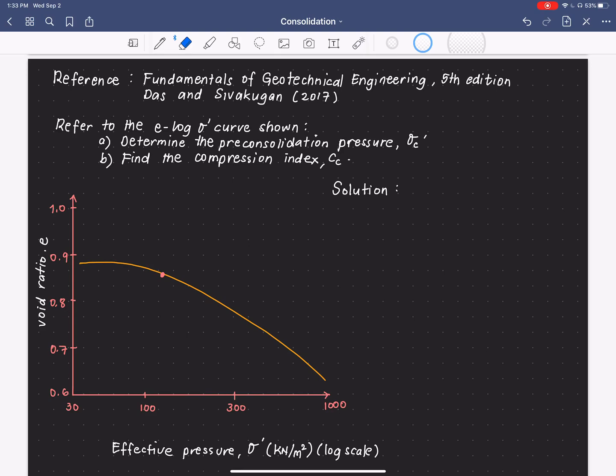This is about preconsolidation pressure. So, this is a problem. We need to refer to the e-log σ' curve or e-log σ' plot shown below, which is a result of consolidation test. And from this result, we will determine the preconsolidation pressure, σ'c, as well as the compression index, Cc.